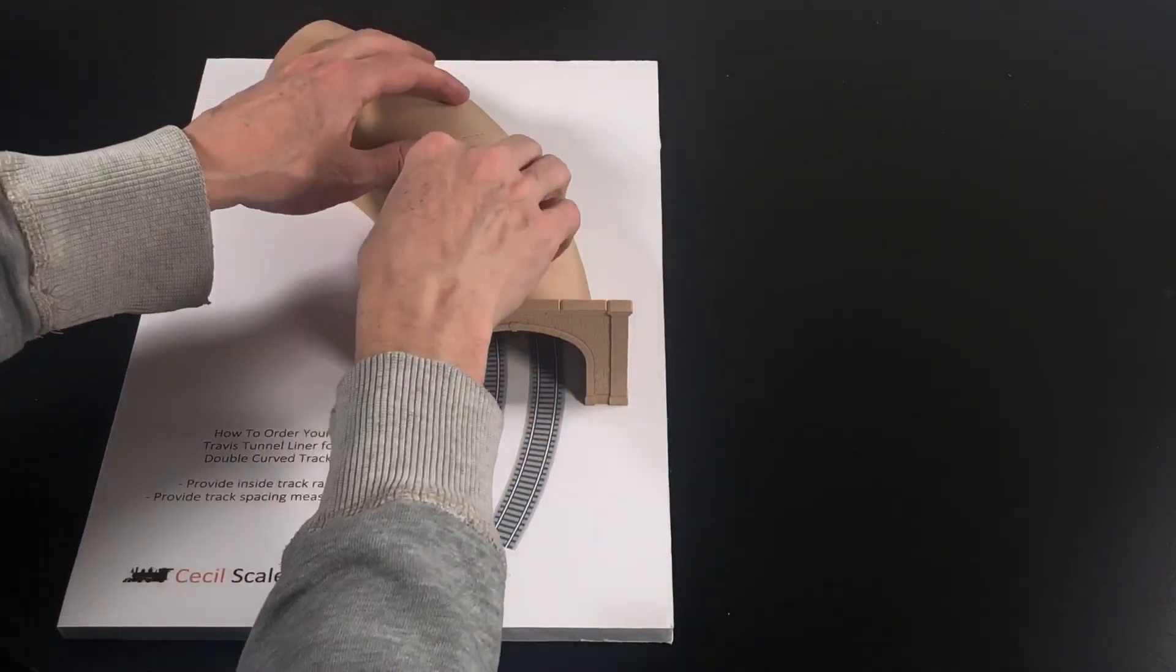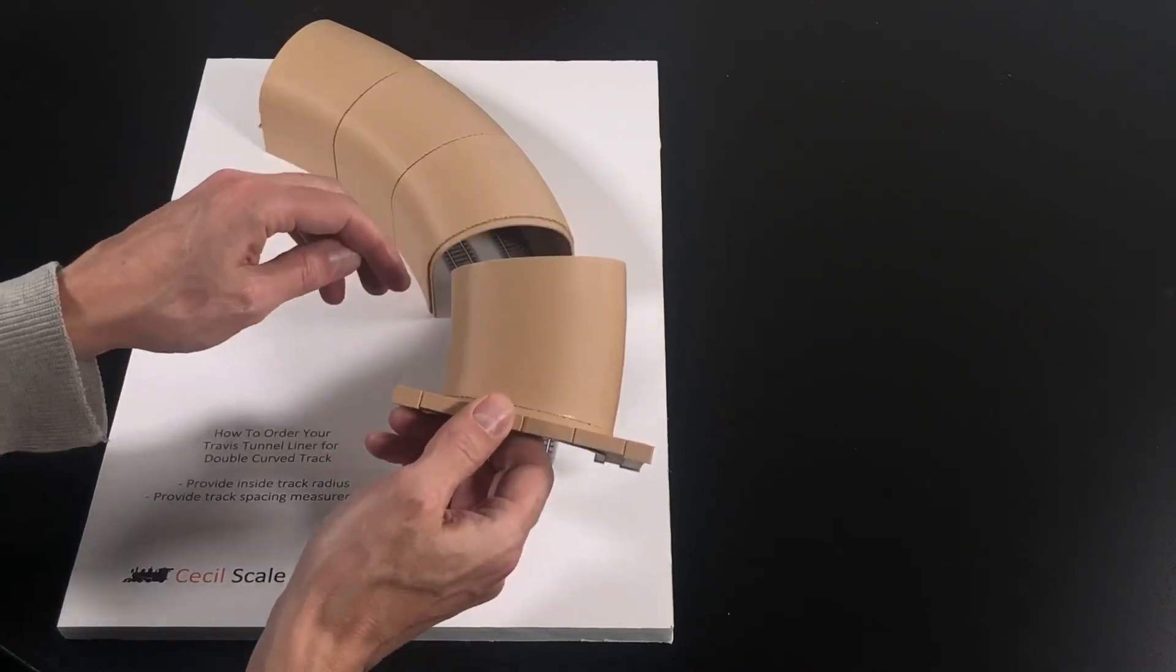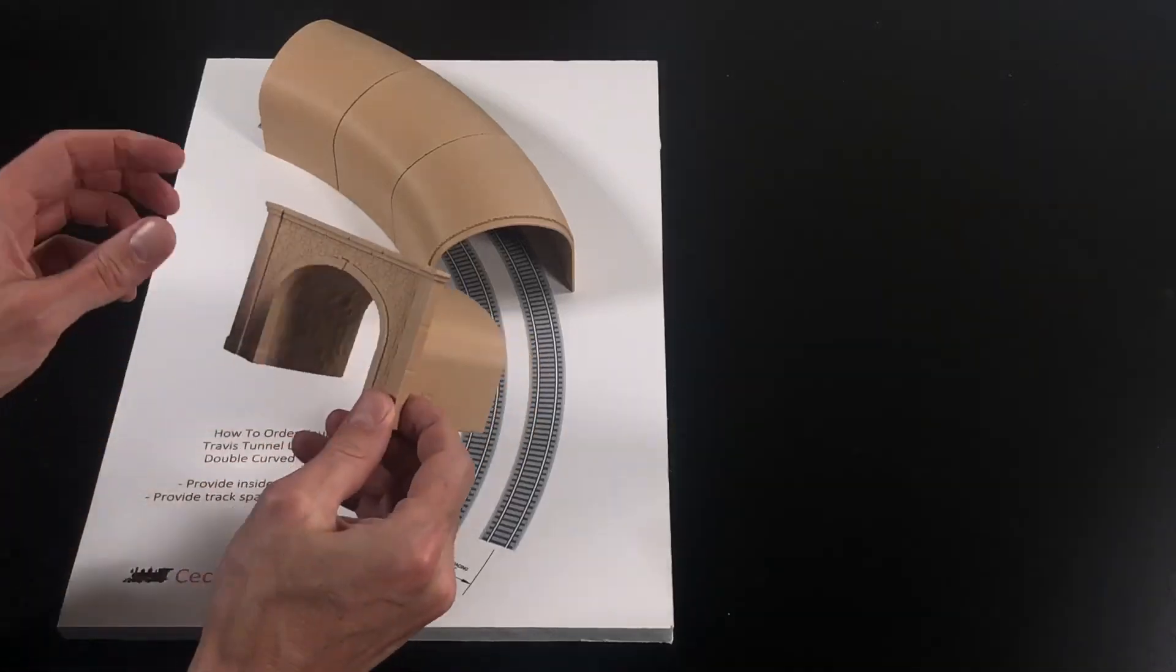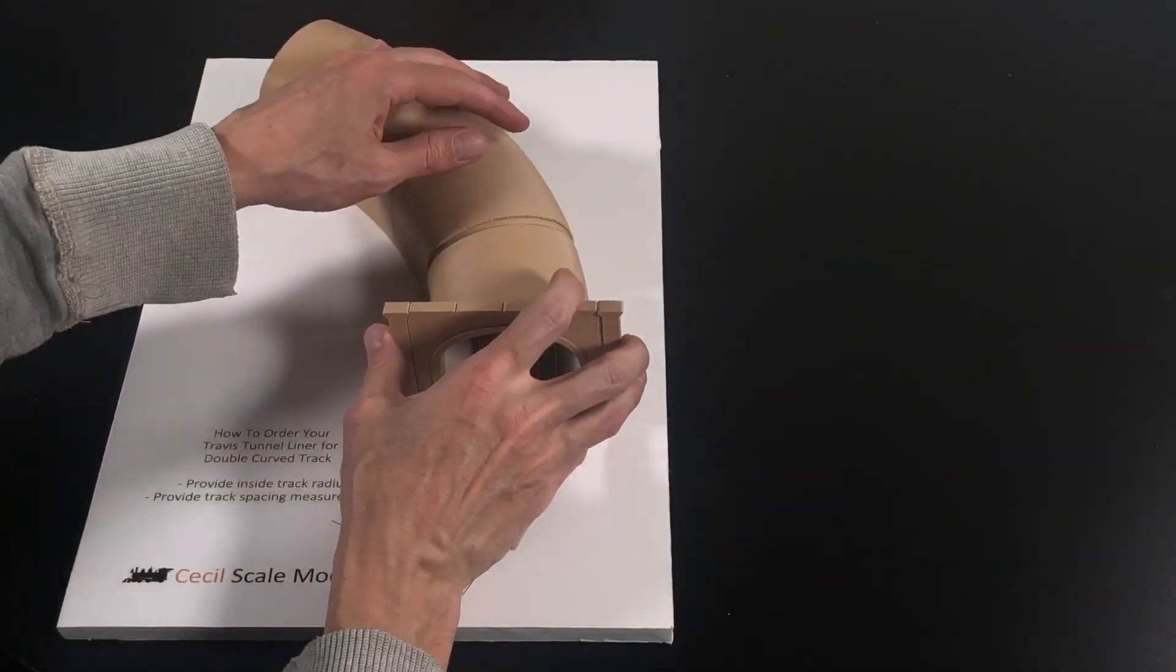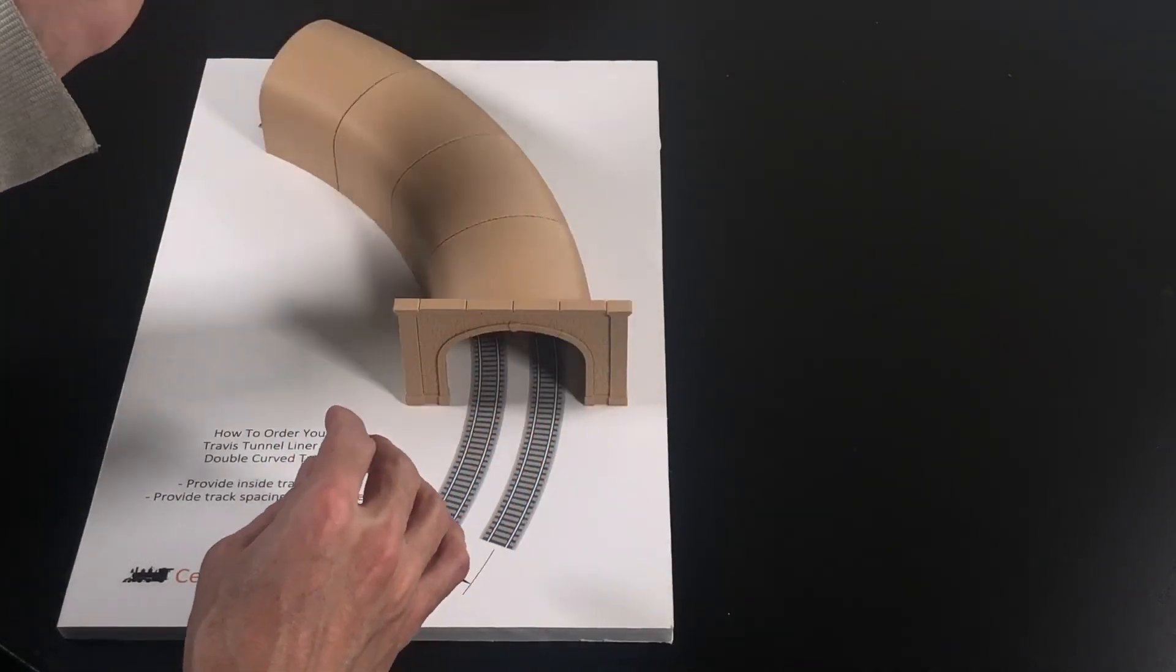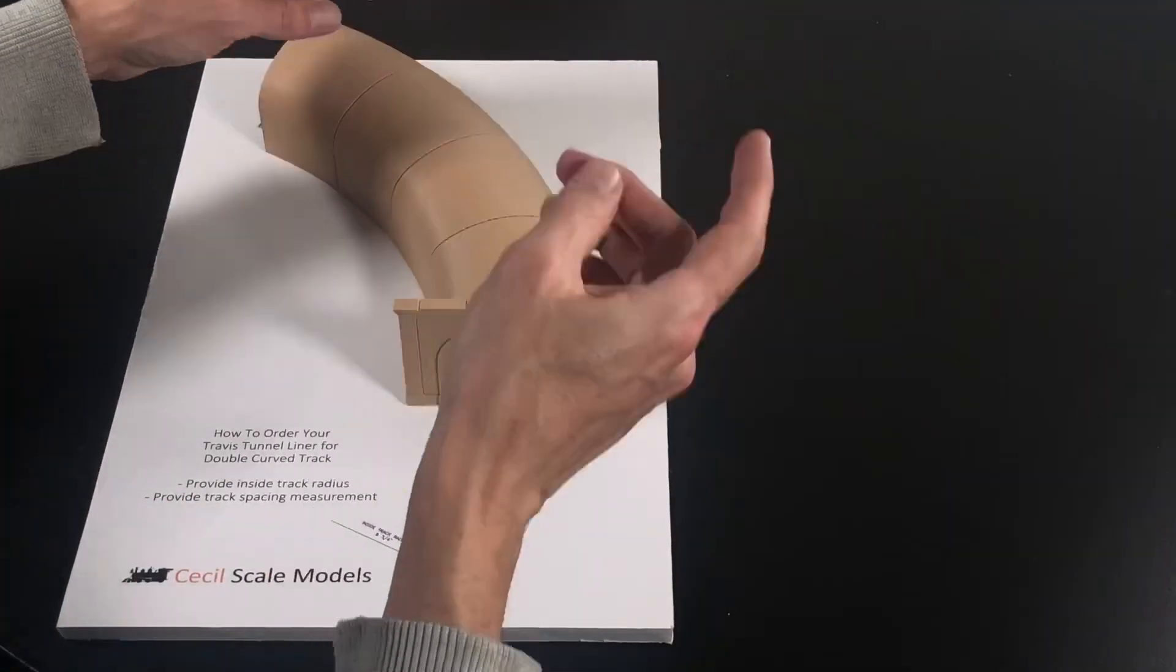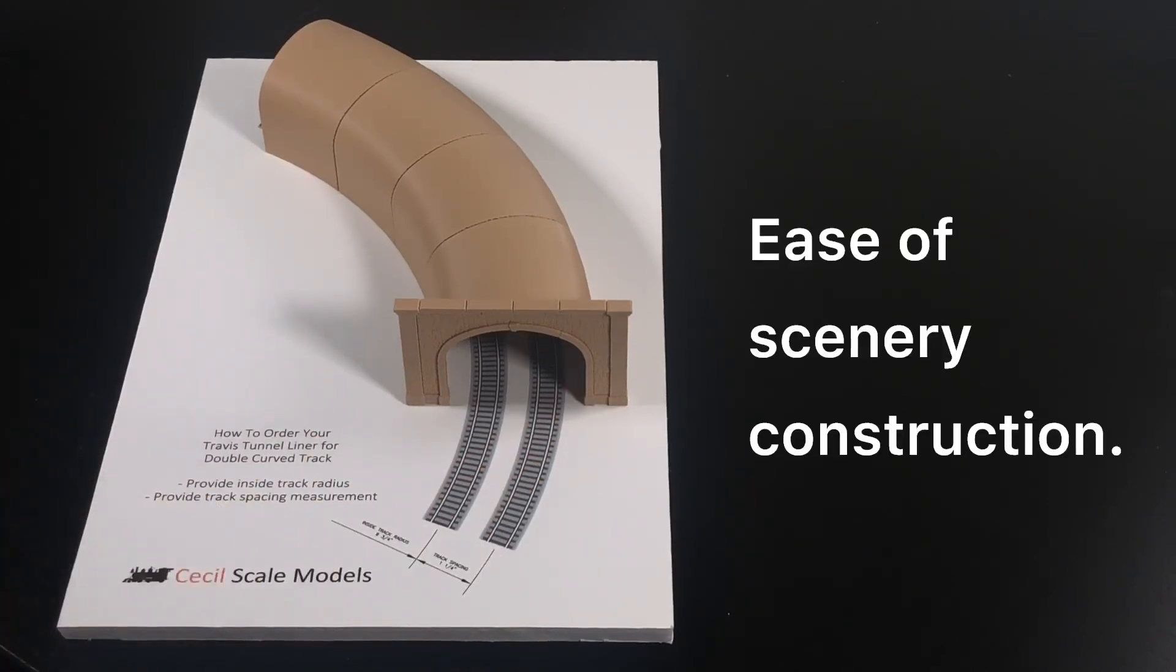The only part of this system that's meant to be permanently attached to the layout would be the first tunnel liner section, which is also glued into the back of your tunnel portal. And then that assembly is then glued down onto the layout. The rest of the tunnel liner sections are left wild so that you can remove them afterward, and we'll talk about that in the next reason why you want to line your model railroad tunnels. So the second reason why we want to line our model railroad tunnels is ease of scenery construction.